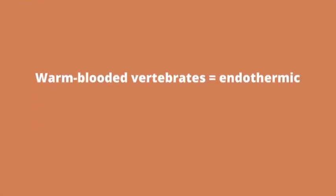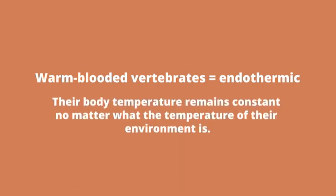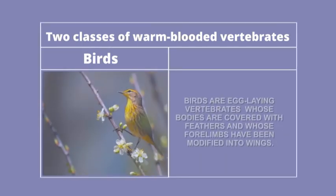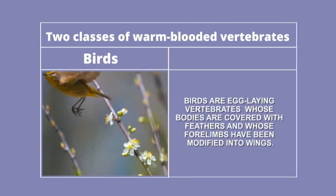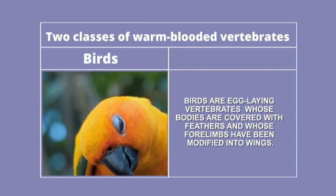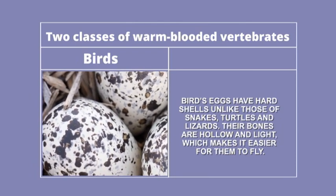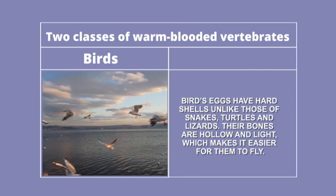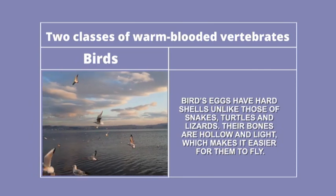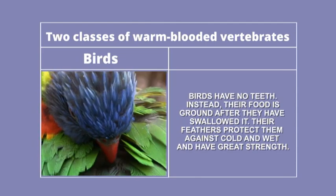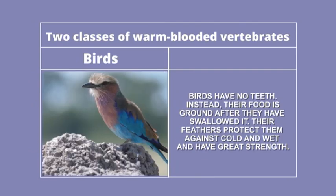Warm-blooded vertebrates are endothermic — their temperature remains constant no matter what the temperature of their environment is. There are two classes of warm-blooded vertebrates: birds and mammals. Birds are egg-laying vertebrates whose bodies are covered with feathers and whose forelimbs have been modified into wings. Bird eggs have hard shells, unlike those of snakes, turtles, and lizards. Their bones are hollow and light, which makes it easier for them to fly. Birds have no teeth; instead, their food is ground after they have swallowed it. Their feathers protect them against cold and wet and have great strength.